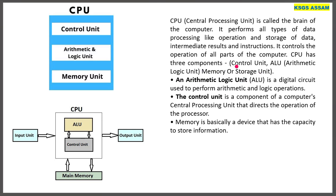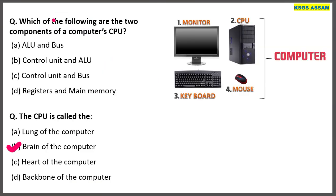The main unit is the ALU, which is a digital circuit used to perform arithmetic and logical operations. The question asks: which of the following are the two components of a computer CPU? The answer includes the Control Unit and ALU.